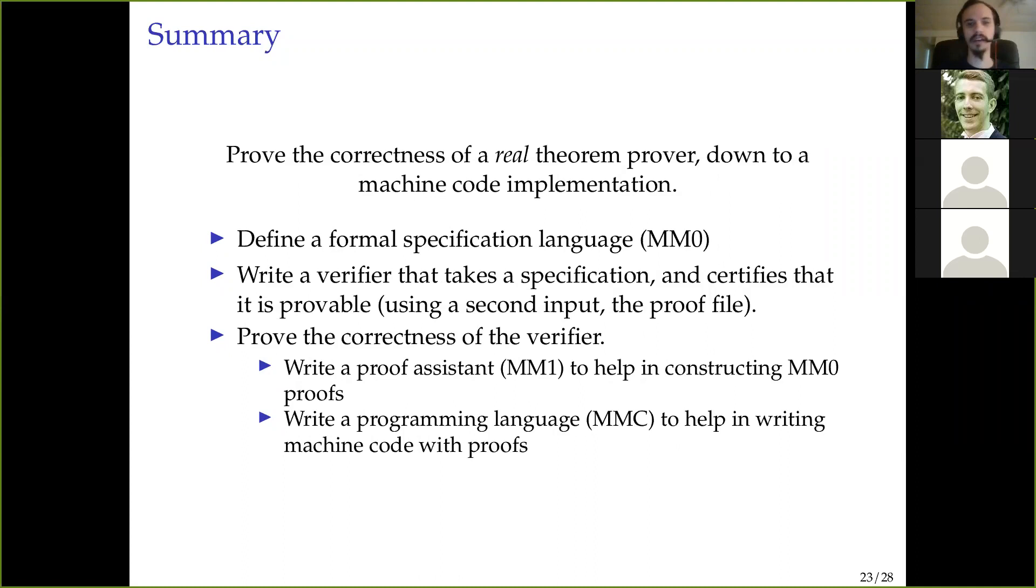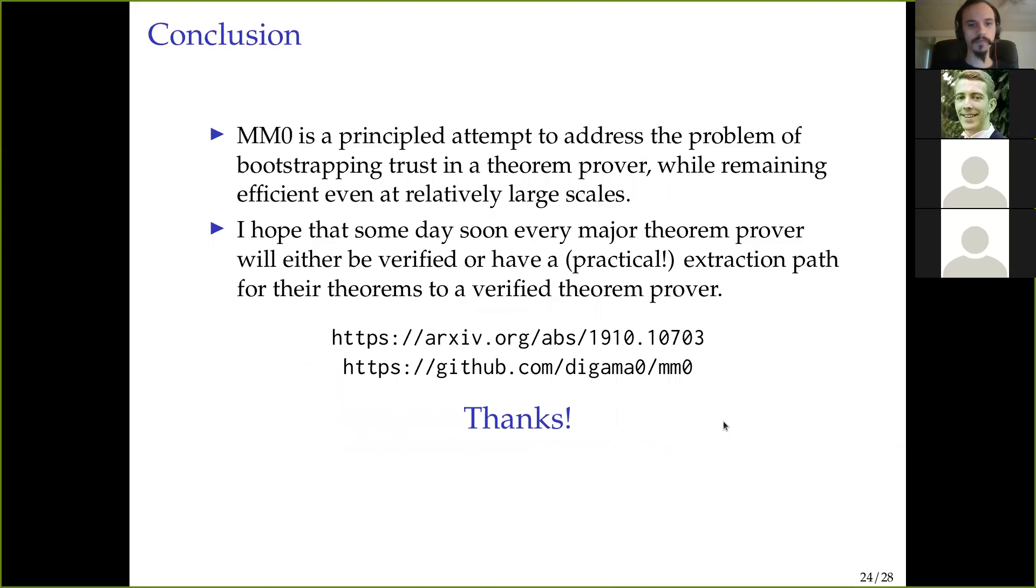And verifier.MM0 has this end goal theorem that, you know, I'd like to be proving. All right. So to recap, the goal here was to prove the correctness of a real theorem prover. Now, MM1 is a nascent theorem prover, so I don't know how real we can call it, but at least we have translations so that we can actually get stuff from, for example, Lean, into MM0 and I hope to really expand that web of translations to all of the others.